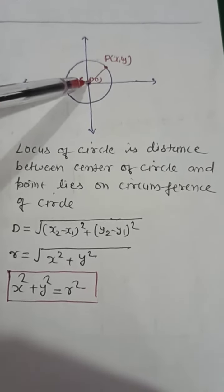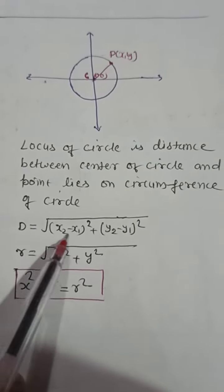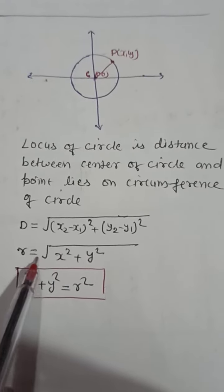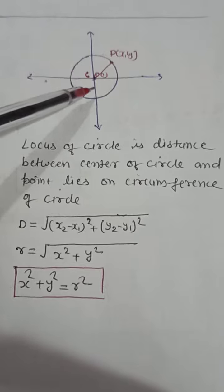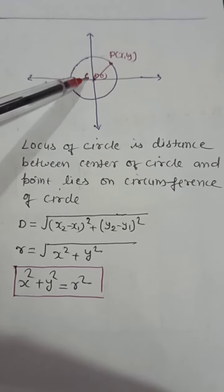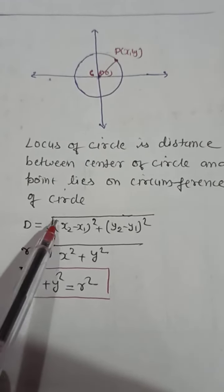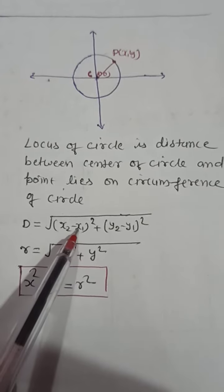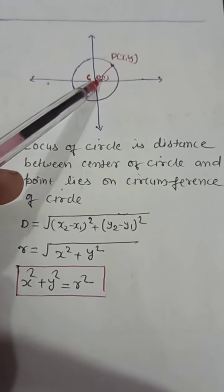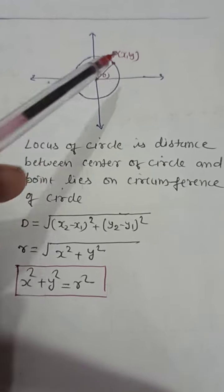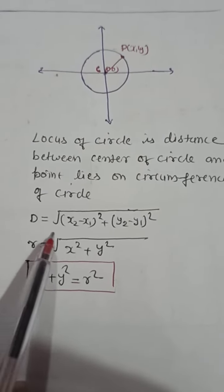So you have to apply the distance formula, and you know that the distance formula is this. Now you will substitute the values - in place of D you will substitute the distance which is called r, and x2 minus x1, that means x1 we consider 0 and y1 we consider 0, x2 and y2 we consider as variables.